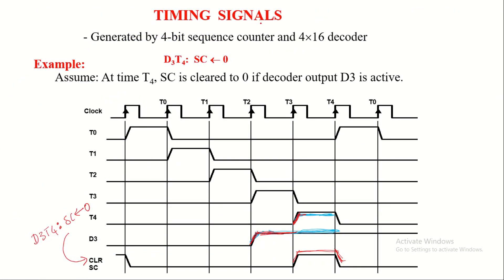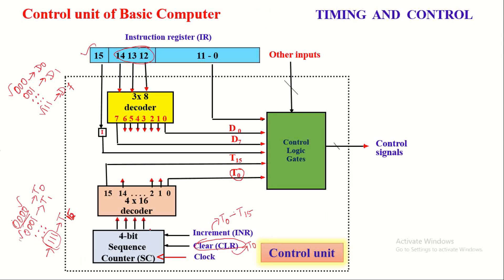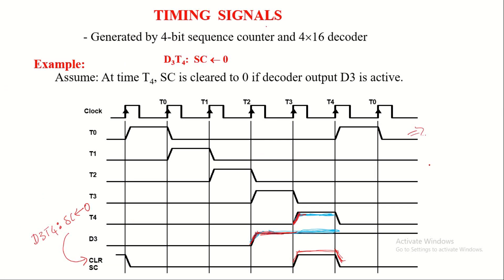Let us now discuss the relationship between control signals and timing signals using an example timing diagram. The timing signals are generated by the 4-bit sequence counter and the 4-by-16 decoder. You can observe that timing signals from T0 to T15 are generated with the help of these components. The 4-bit sequence counter has the inputs increment, clear, and clock.